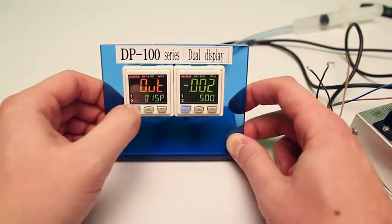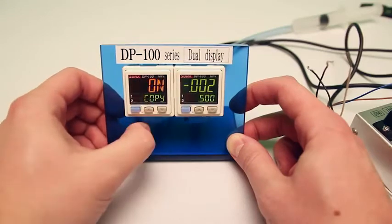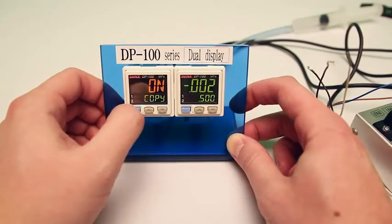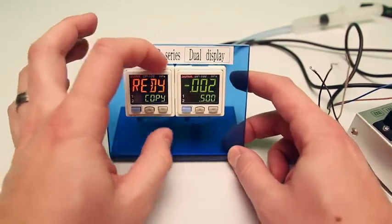I'm going to toggle over to copy and by pushing the up button I'm going to turn it on. When I hit mode, it's going to go back to ready, so it's ready to copy from this sensor over to this one.